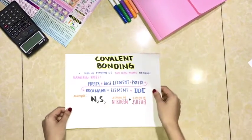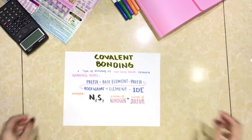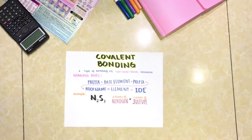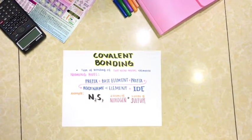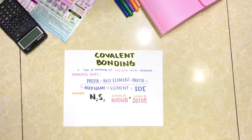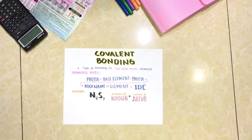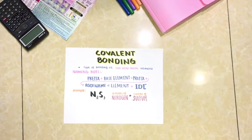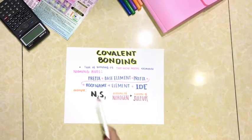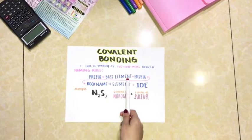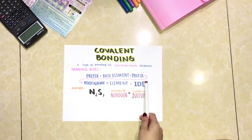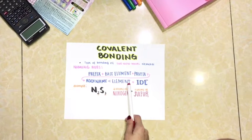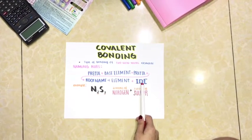After polyatomic bonding, we have covalent bonding. Covalent bonding is a type of bonding between two non-metal elements. For the naming rules, we have: prefix plus base element plus prefix plus the root name of the element plus the suffix -ide.